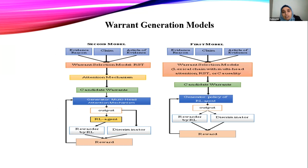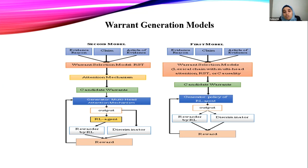To achieve this and to address those challenges, we developed two models. For both models, we have the same input: the claim and evidence. We have an article which is long, and we tried to capture the most relevant fragments in the text that could be related to warrant information. We used three different methods to retrieve the most relevant information.